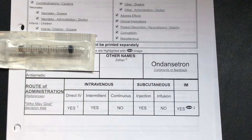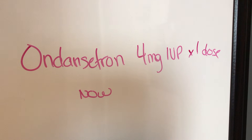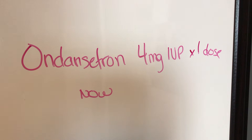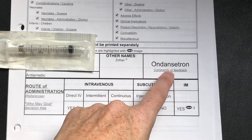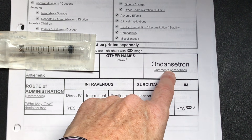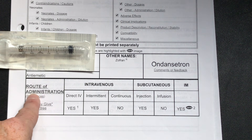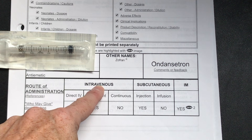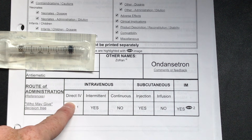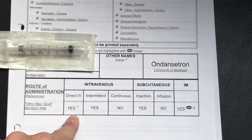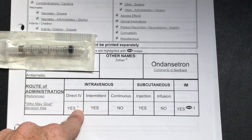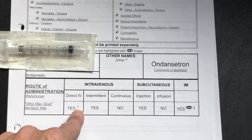We're working with our patient today and we receive an order for ondansetron IV push. The first place we want to look to see if we can give it IV push is the parenteral manual. Under routes of administration, IV direct is the same as IV push, and it says yes, but there's a number one beside it — that means I need to do a little bit more reading to find out if I can give it.